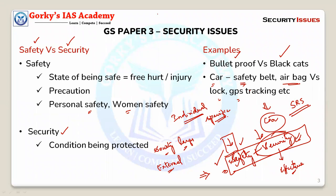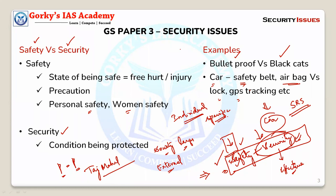Safety and security are not limited to living beings. Even the Taj Mahal has a security cover to protect it, and we have safety measures when entering that particular place. So it is more of precaution versus protection: precaution is when we try to protect ourselves; protection is something given from external. These are the basics of the two words — safety and security.